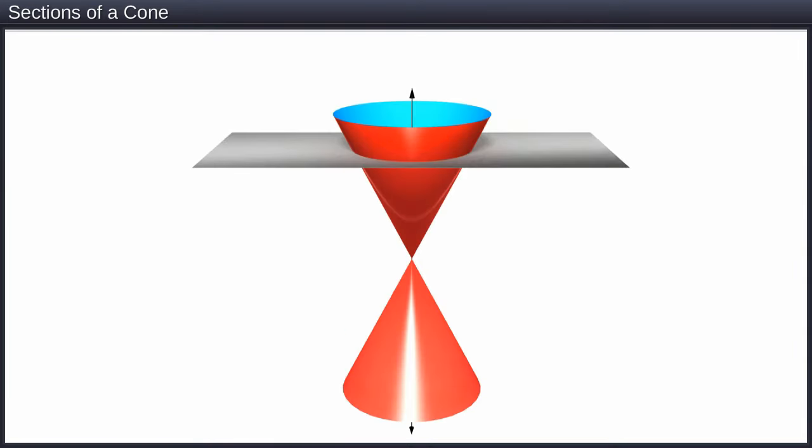When a plane intersects a cone, it cuts a section from the cone. This section is called a conic section or a conic.